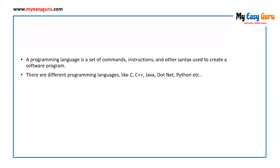For Java also, you compile the programs. For some programming languages, we require to compile the programs before executing them. Whereas for some programming languages — for example, Python — we don't require to compile the program; you can directly run it. In Python, there is an inbuilt interpreter which converts the programs into byte code at the time of executing the programs.